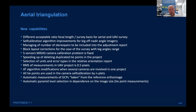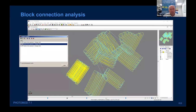Other improvements include: automatic pyramid level selection depending on image size — important because small UAV images require a different pyramid level compared to huge images from professional cameras. Also, block connection analysis: when an algorithm cannot find ties between parts of the block, this new tool makes it visually easy to identify which part is not connected, so you can decide whether to add manual tie points or restart automatic measurement with different parameters.